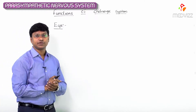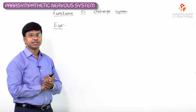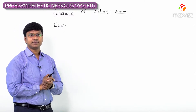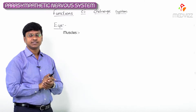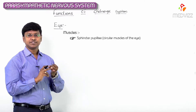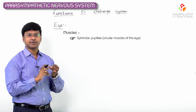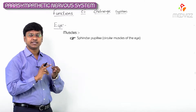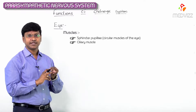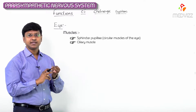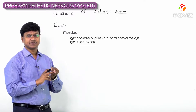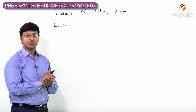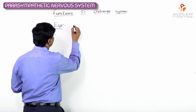Let me discuss the effect of the cholinergic nervous system on the eye. Within the eye, we have muscles called the sphincter pupillae, which are the circular muscles of the eye, and then we have another muscle called the ciliary muscle. So one is the sphincter pupillae and the other one is the ciliary muscle.